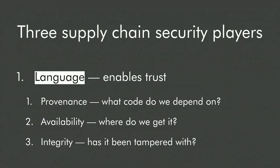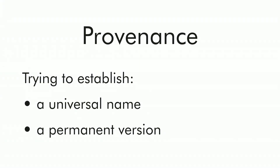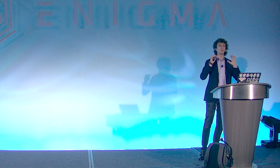Let's start by talking about what the language needs to do. The language enables all the trust involved in the supply chain. It has three roles. It has to solve provenance — that is, what code are we even running? Do we know the version? Do we know the source? Is it going to be available in the future? And do we know that it has not been tampered with? Provenance means we need a universal name for dependencies so that two different companies, two different developers, two different machines can agree on what software they need to run — and a permanent version. Version 1.2.3 can't change meaning over time.